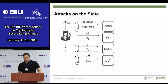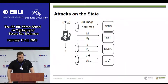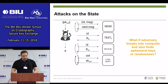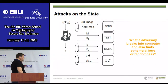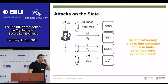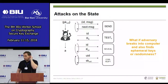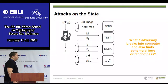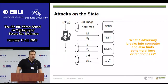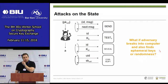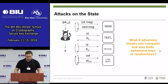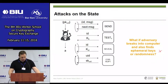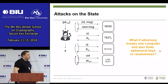TLS 1.3 still looks good, even though a security proof in the BR model may not cover KCI attacks. If you have the client's key, you would still need to forge signatures under the server's key.